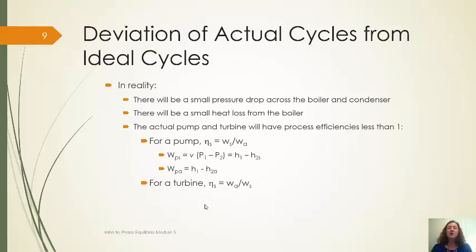Simply knowing how to relate this means that I can use these definitions to calculate what the actual exit states for that equipment is. When I do a cycle that has actual equipment in it, I first do the calculations as if it were ideal, and then I make the corrections using process efficiencies.